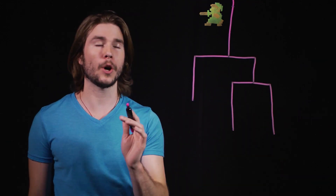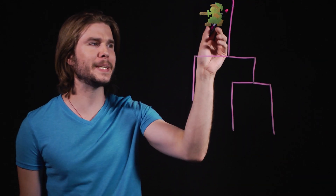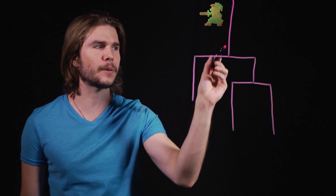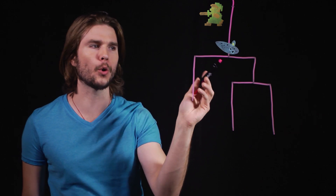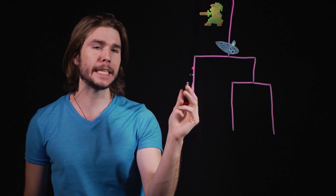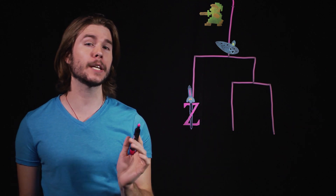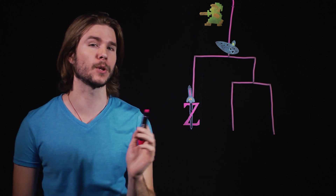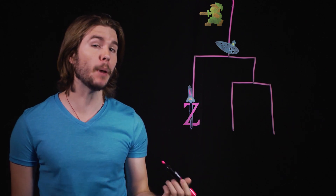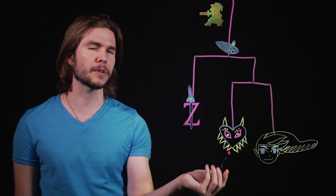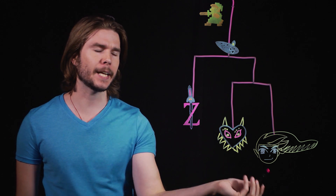So let's draw this out. We start at the beginning, then get down to the events of Ocarina of Time, and then either the hero is defeated — leading to A Link to the Past — or the hero is successful, which leads to both Majora's Mask and Wind Waker.